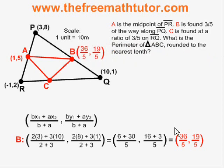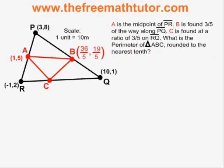Now it's time to move on to point C. Point C is found at a ratio of three to five on RQ. Therefore, if R is the starting point and Q is the ending point, A is three and B is five in my ratio. Using the ratio formula again with A equals three and B equals five,